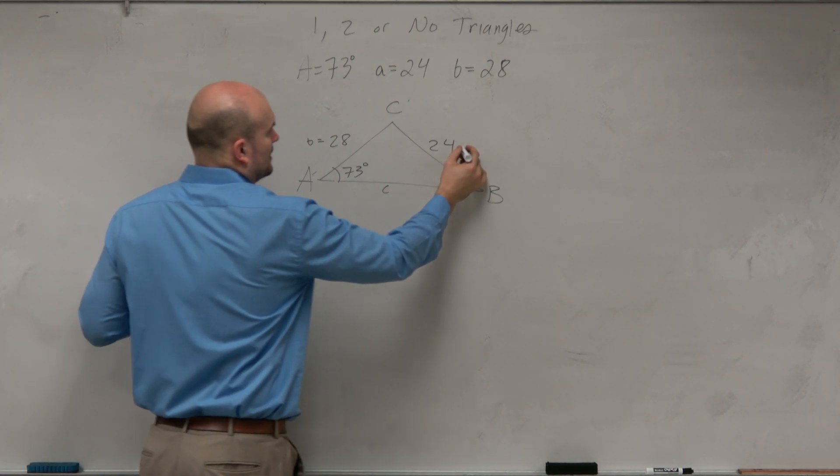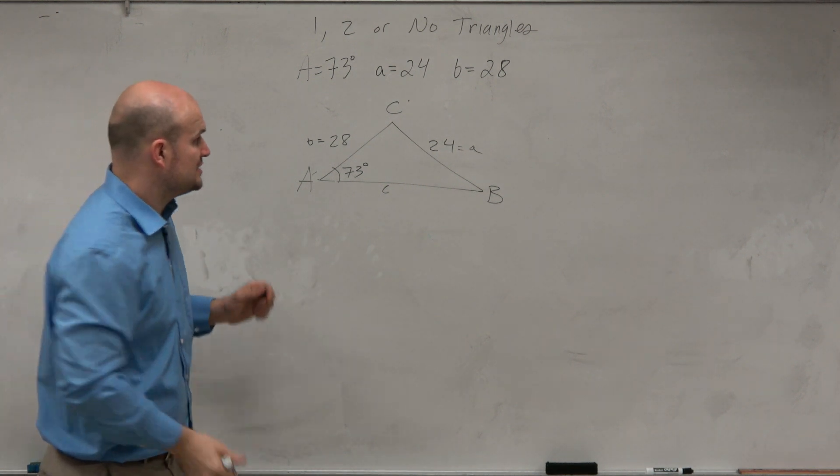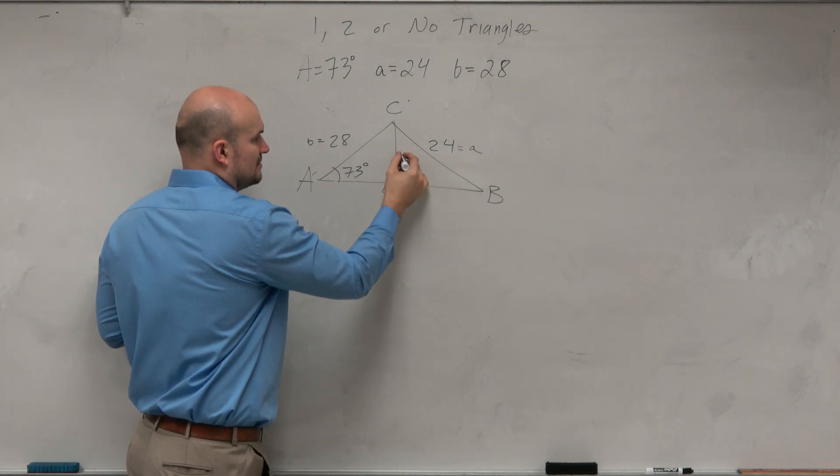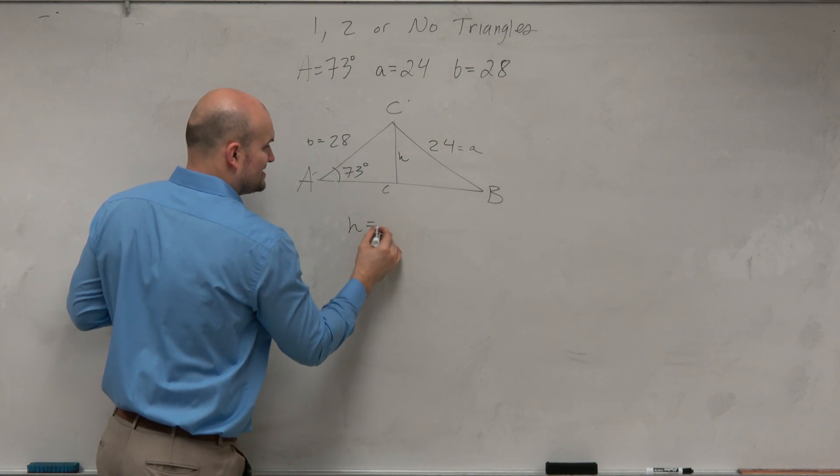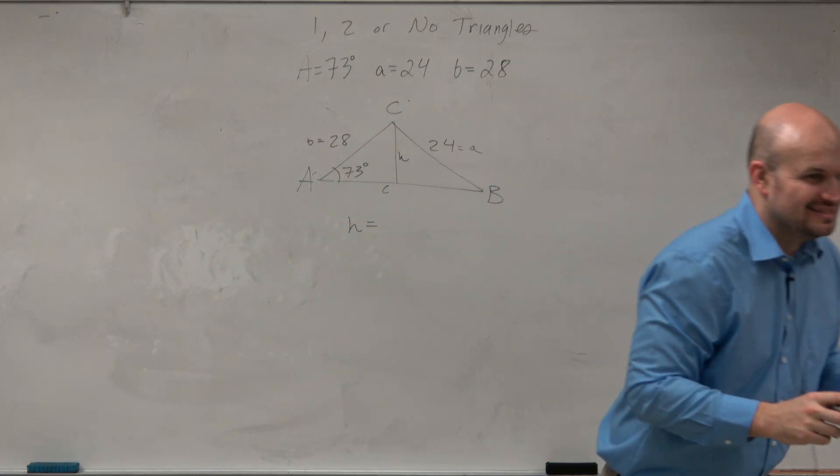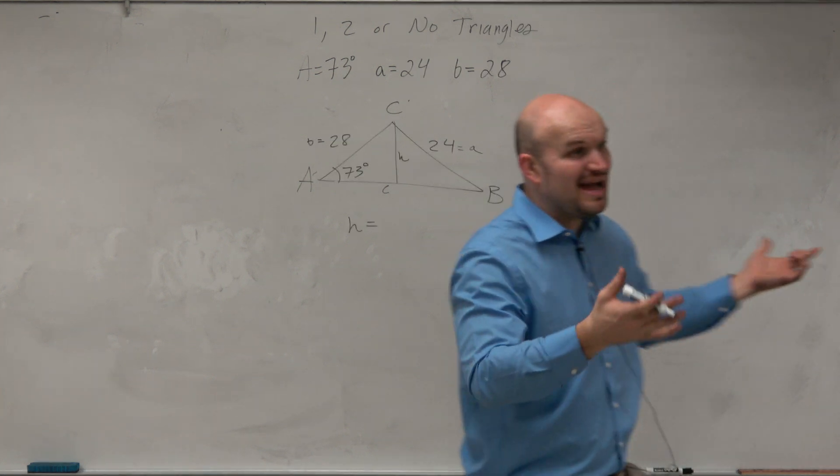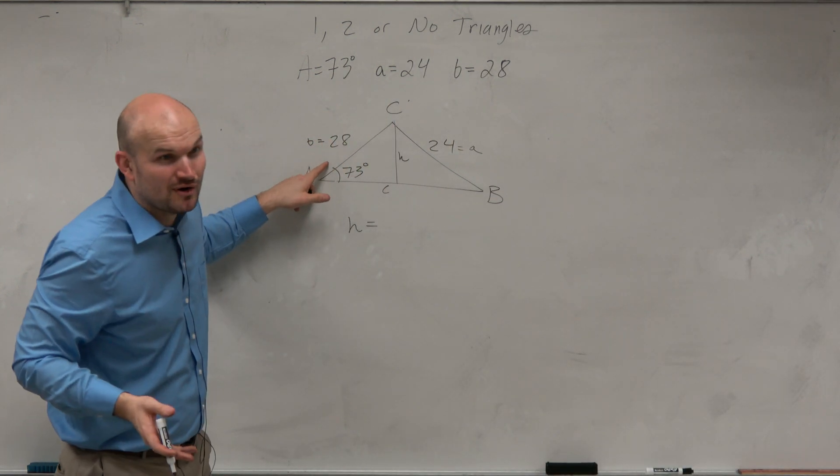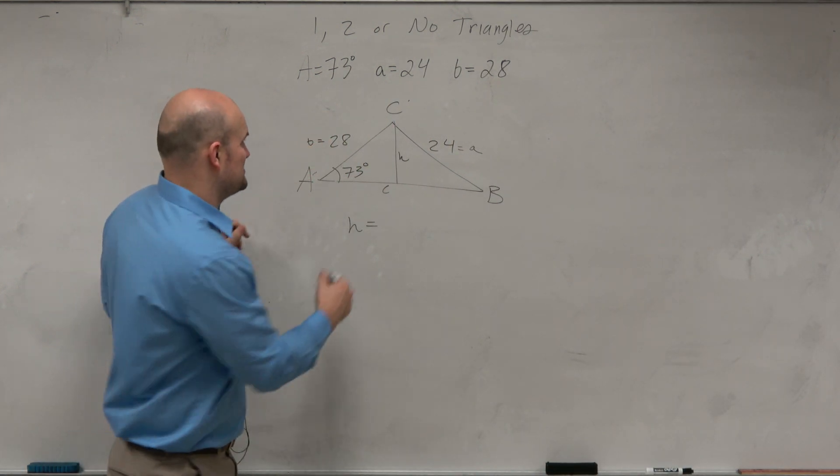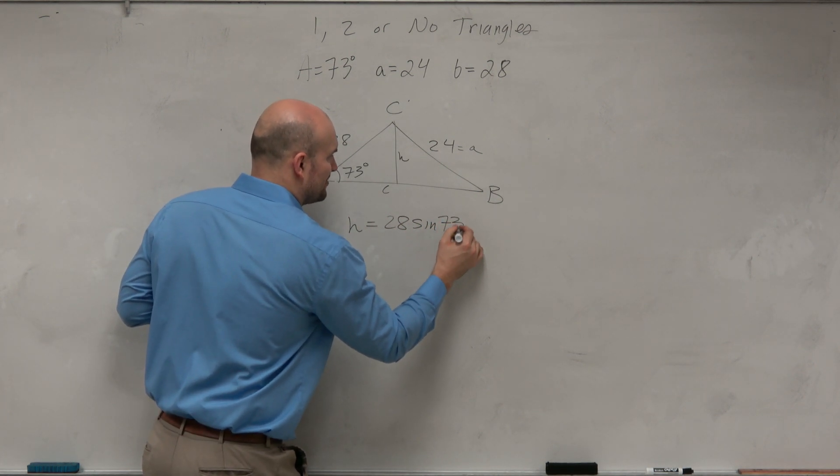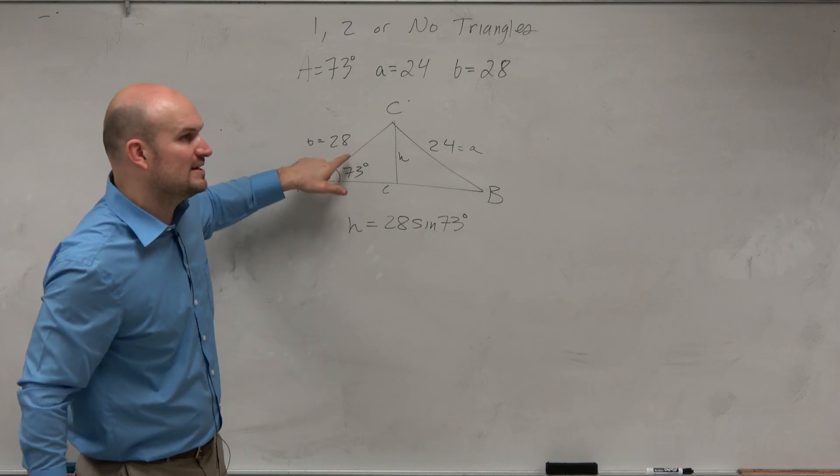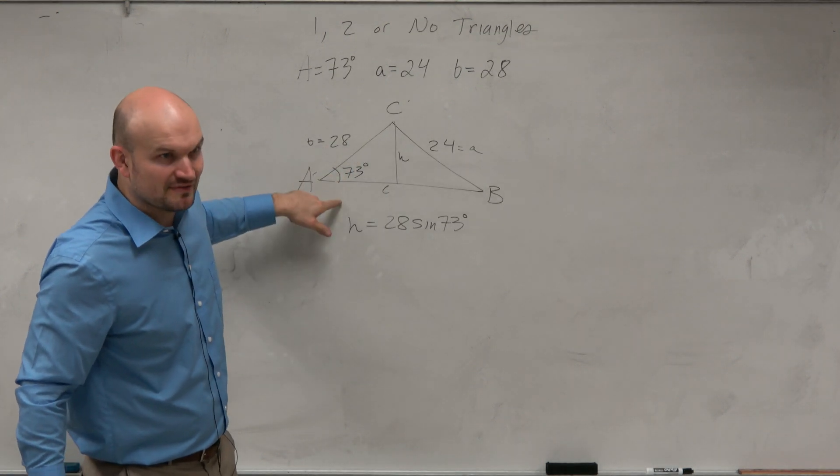So then this is little a. So one way we could do this is we could figure out what H is. Now again, hopefully you guys get this. H is equal to sin. Yeah, sin. Right, but we don't have C, right? This isn't C anymore. So this is B now. So hopefully, guys, you're not going to have to memorize this if you do enough of these problems. But hopefully, you guys will recognize it's always this side times the sine of the angle.